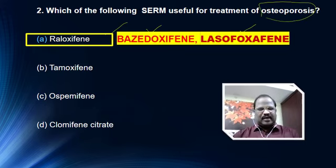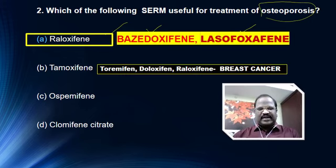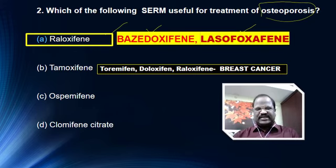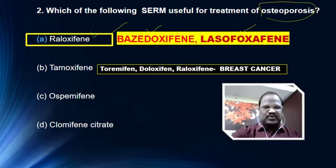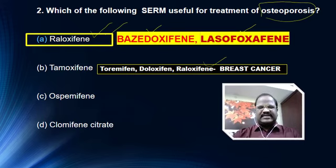Whereas tamoxifen and some more SERMs like toremifene and droloxifene are useful for breast cancer. Remember, raloxifene is useful for both treatment of breast cancer as well as for osteoporosis.